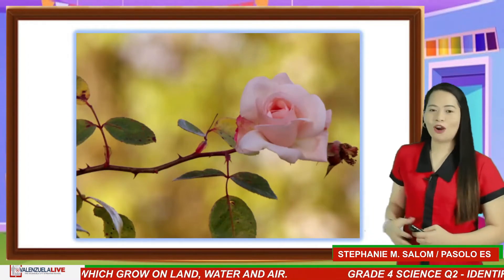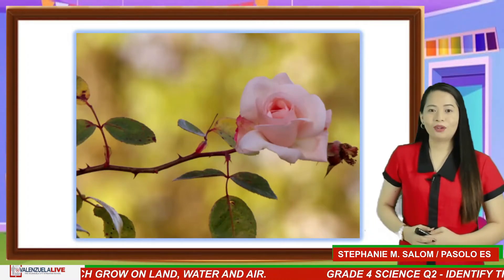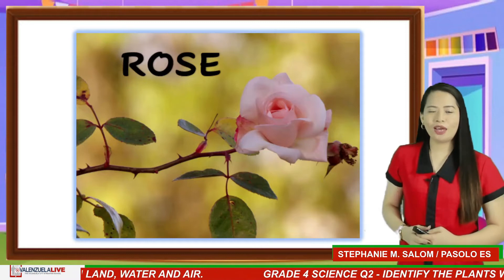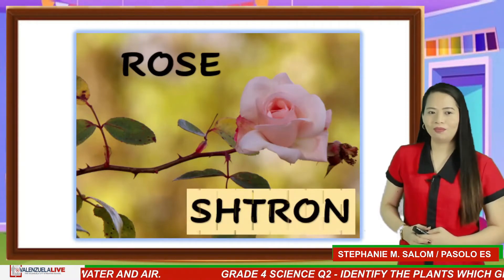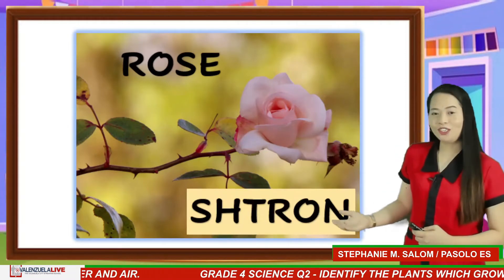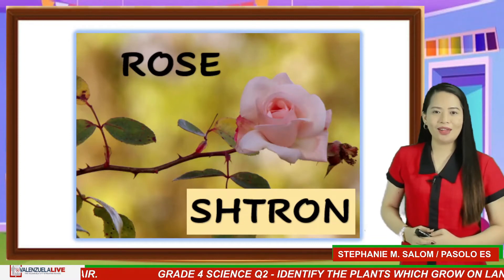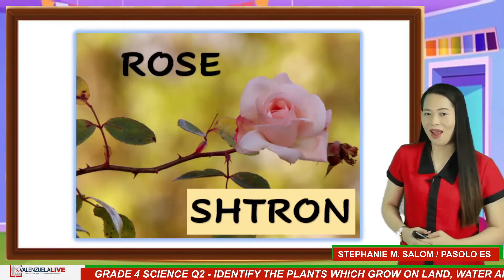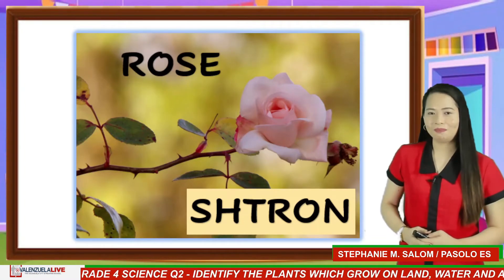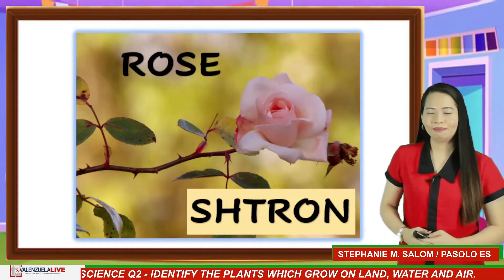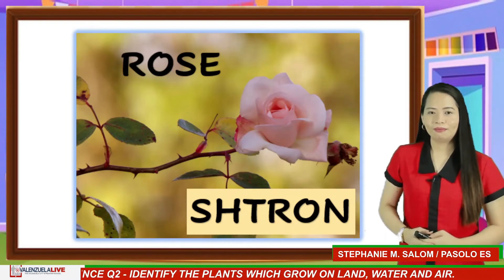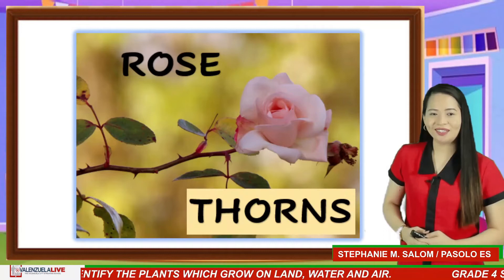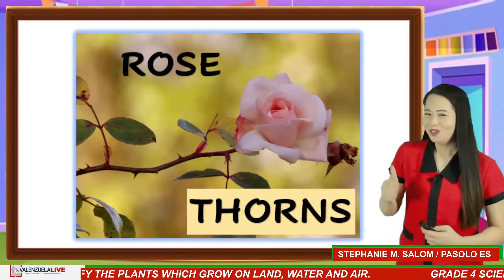Let's solve the first one: Rose. What specialized structure does it have? Fix the jumbled letters to come up with an answer. Use the chat box to type your answer. If your answer is thorns — good job!